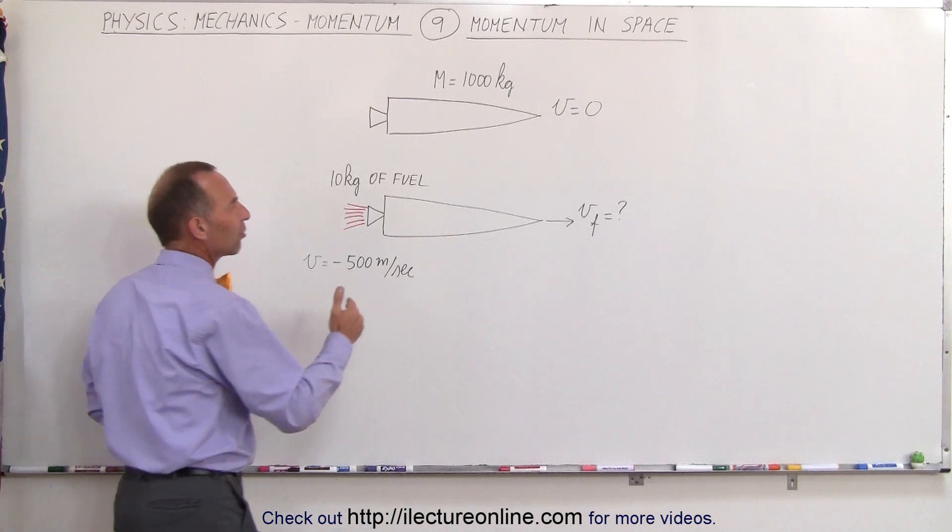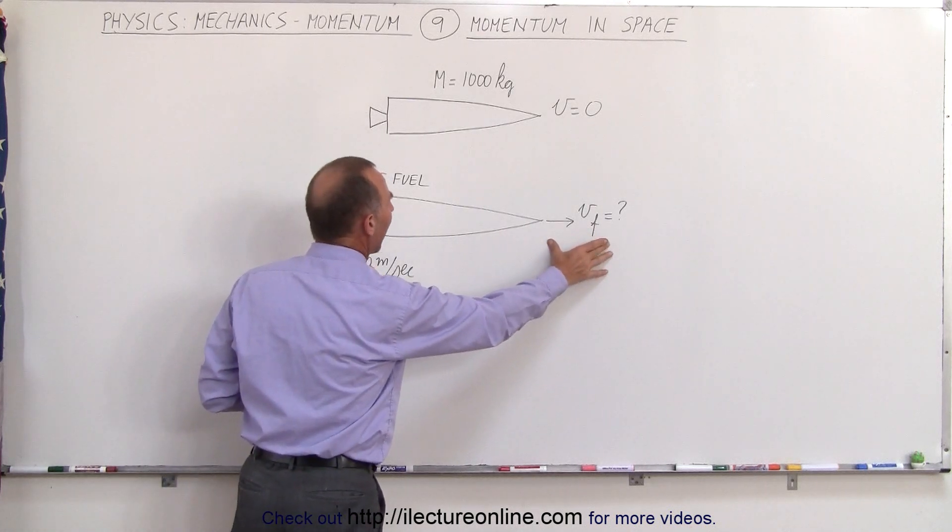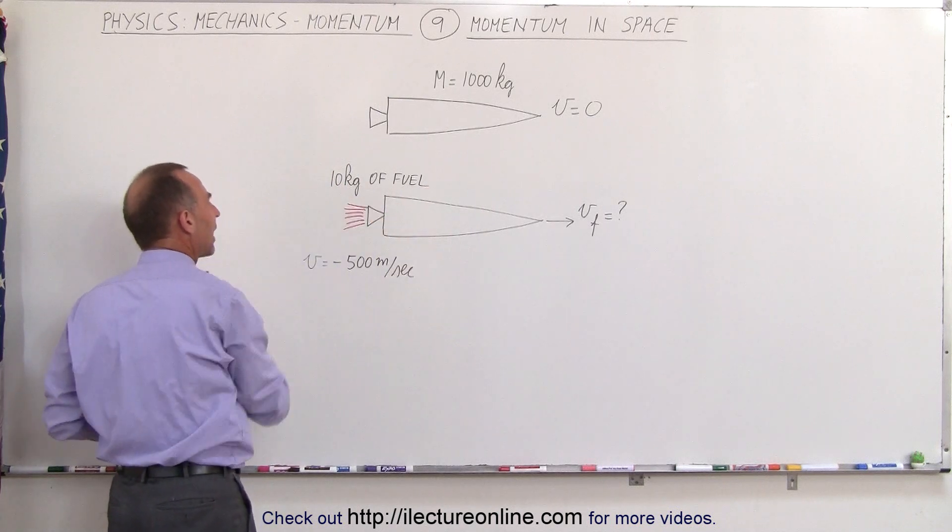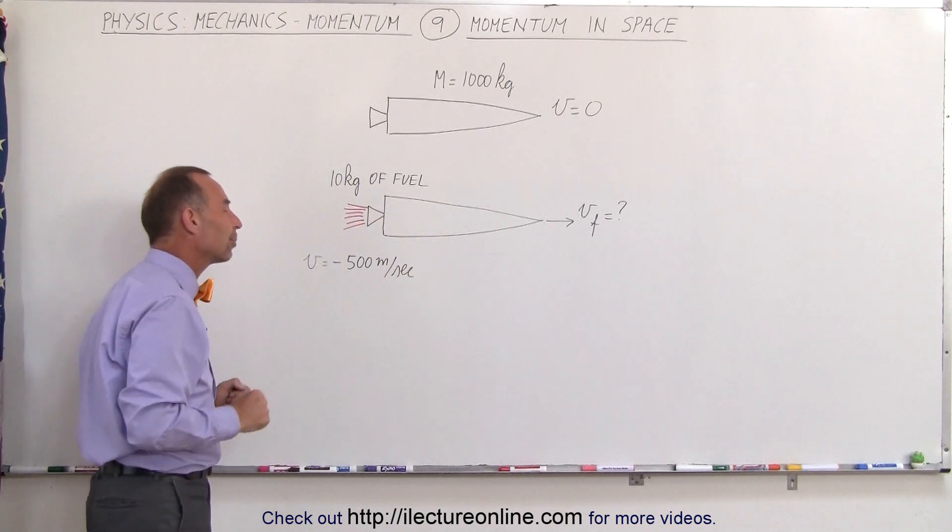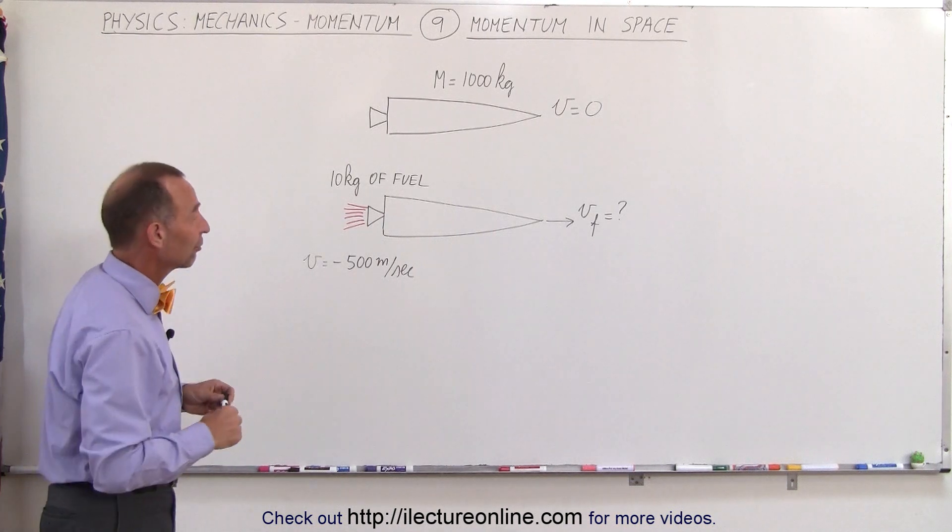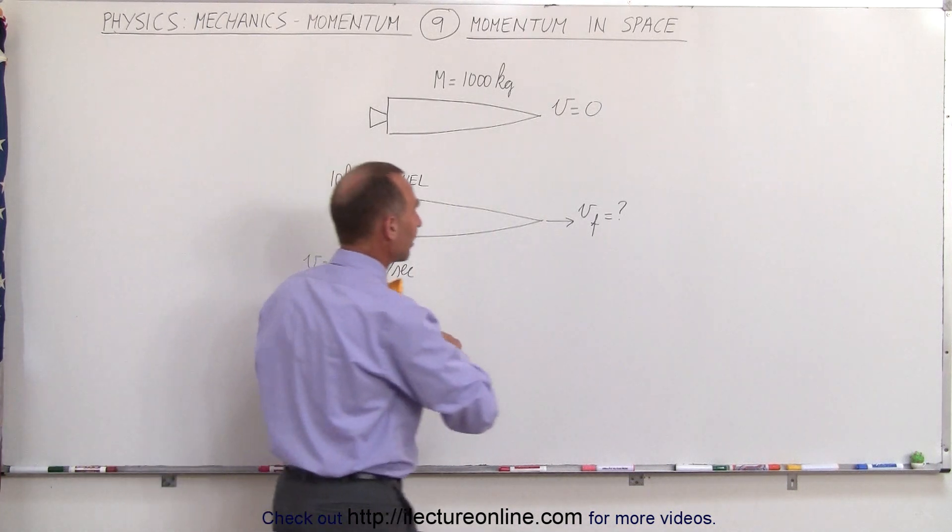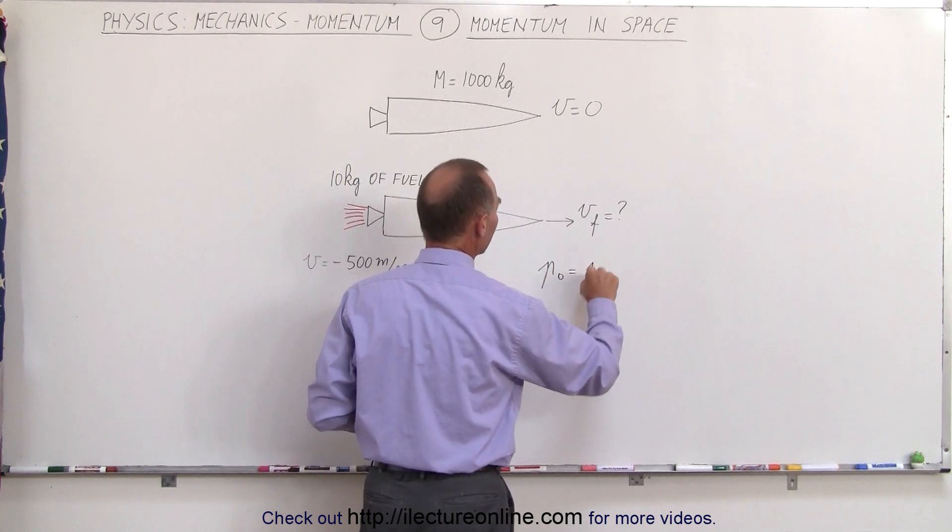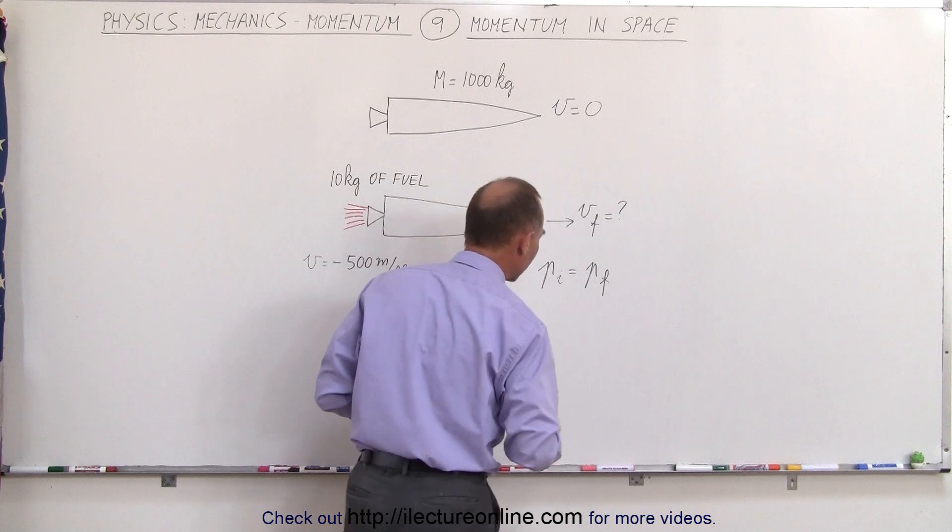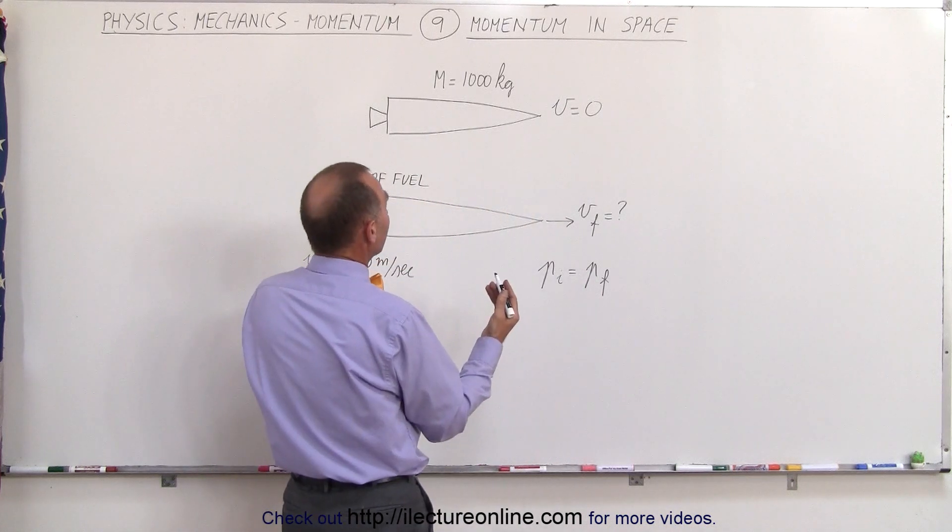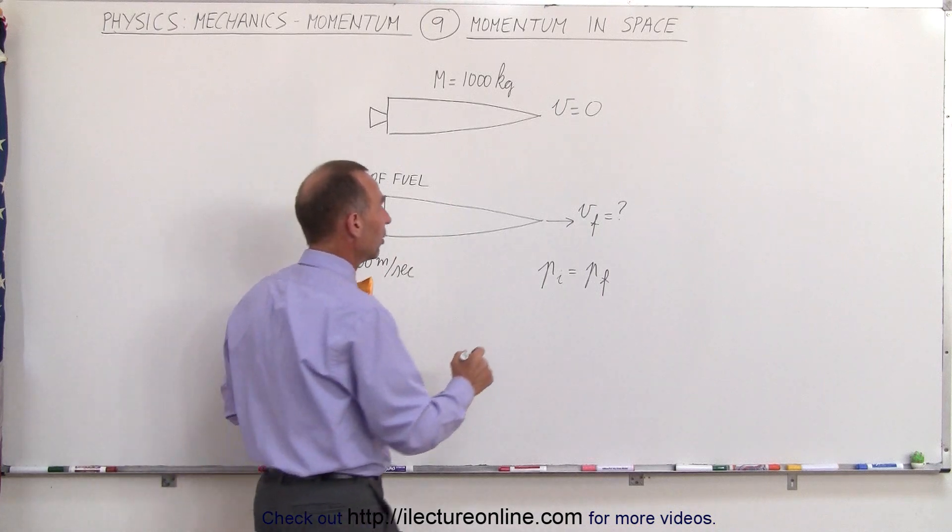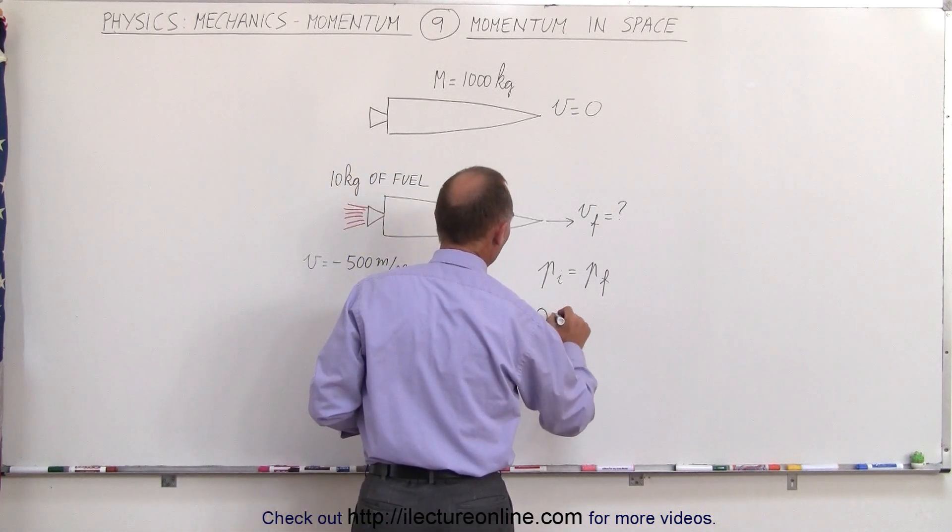So how fast will the spaceship be moving after 10 kilograms of fuel is burned and spewed out the back of the engine at 500 meters per second in the negative direction? Well we use the conservation of momentum. We can say that p initial is equal to p final and initially the momentum is zero because nothing is moving, the spaceship is sitting there so the initial momentum is equal to zero.